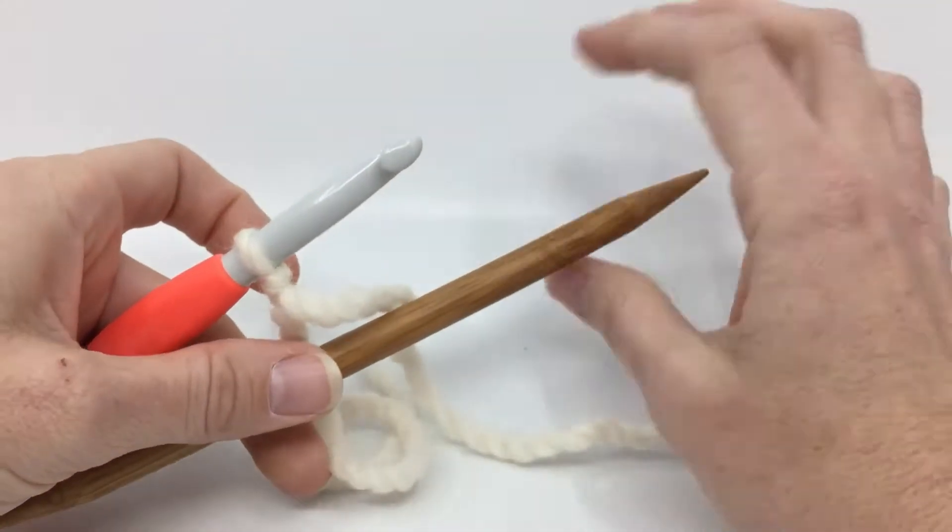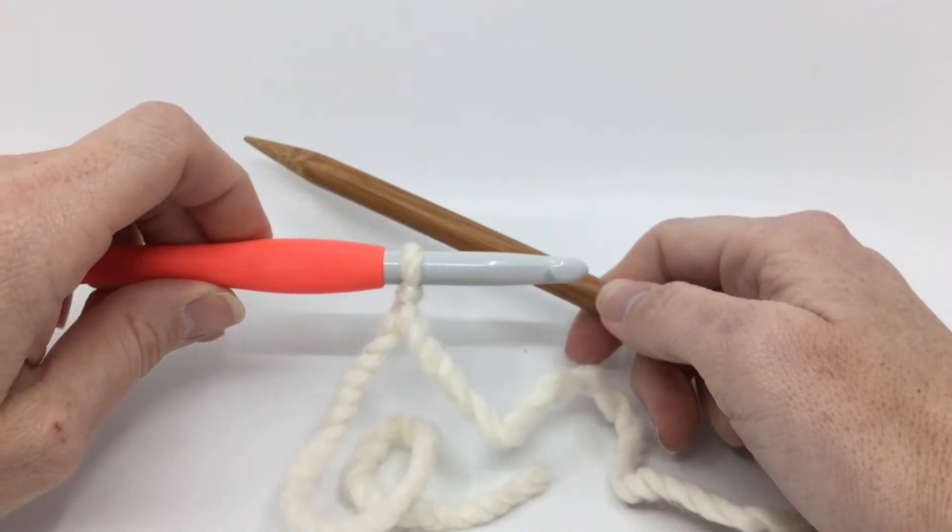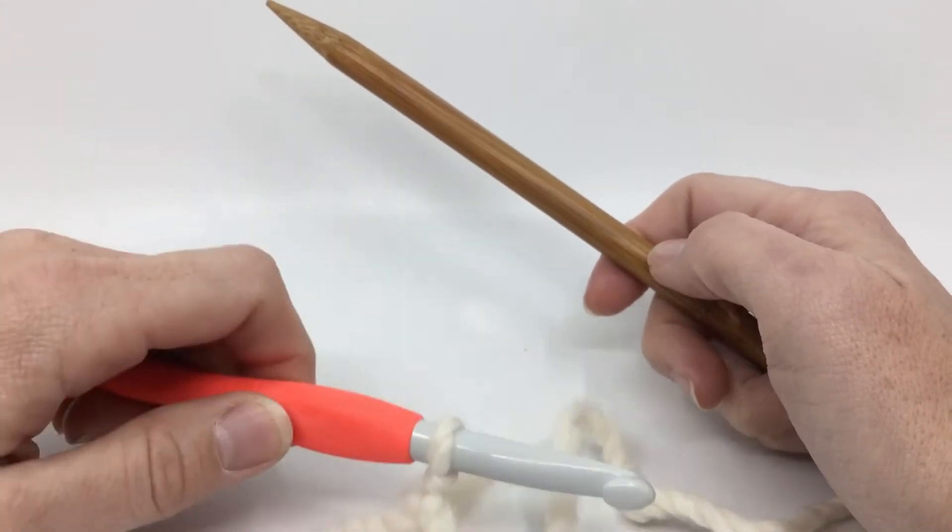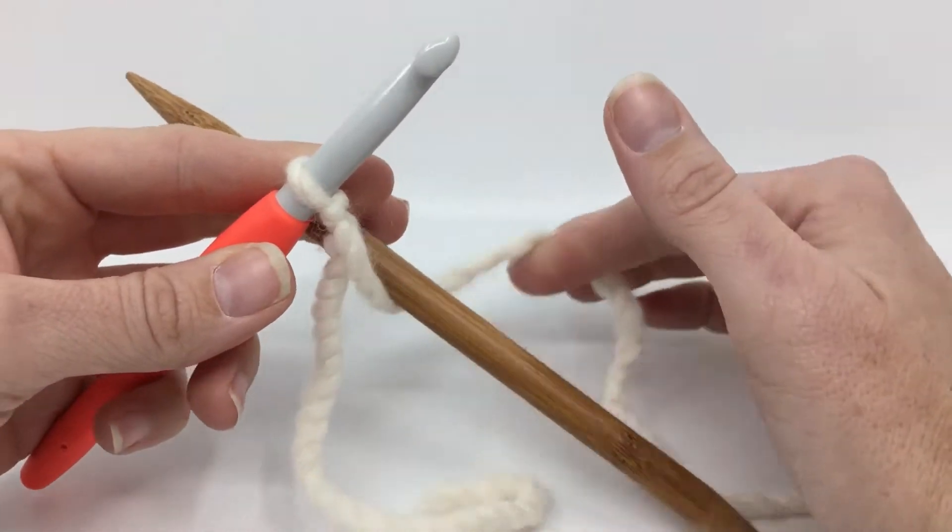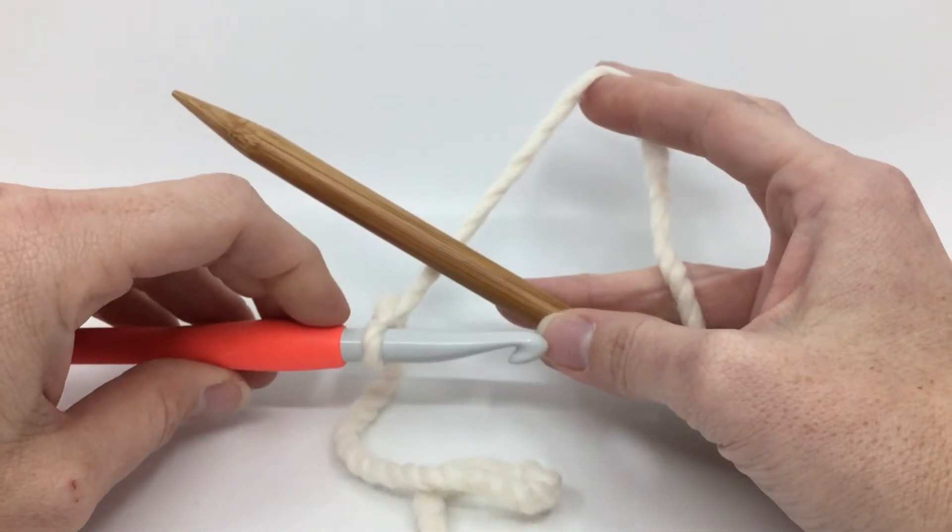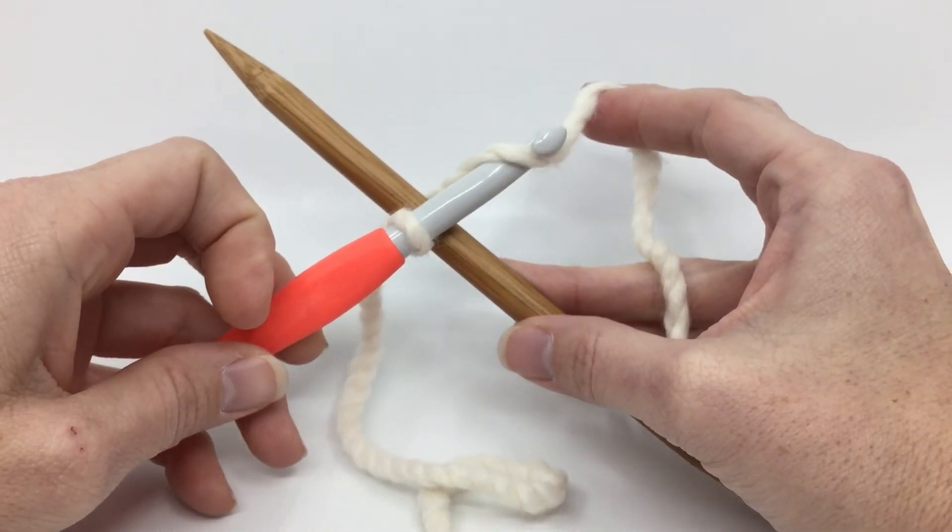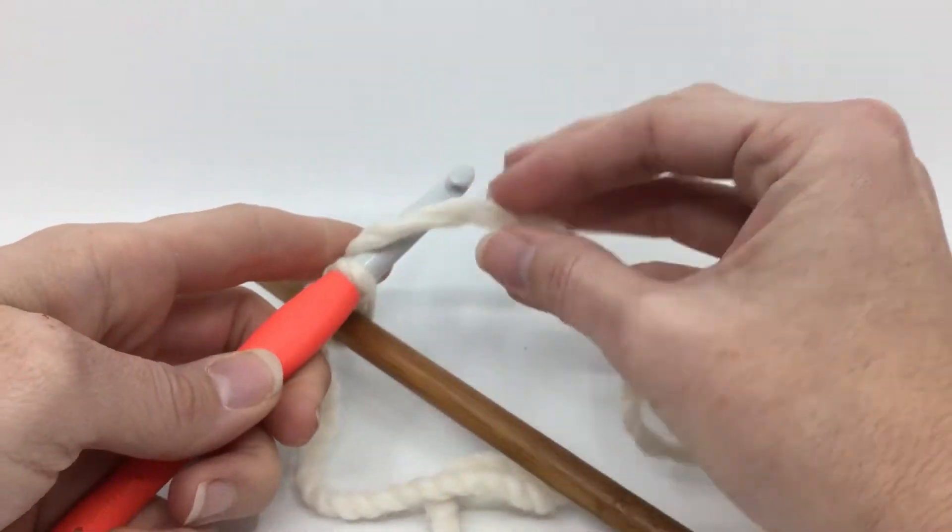Then we take our needle and we are going to create kind of foundation chains around our needle. What we're going to do is take the yarn behind the needle, our hook in the front, yarn over just like we would for a foundation chain, and then we're going to pull...